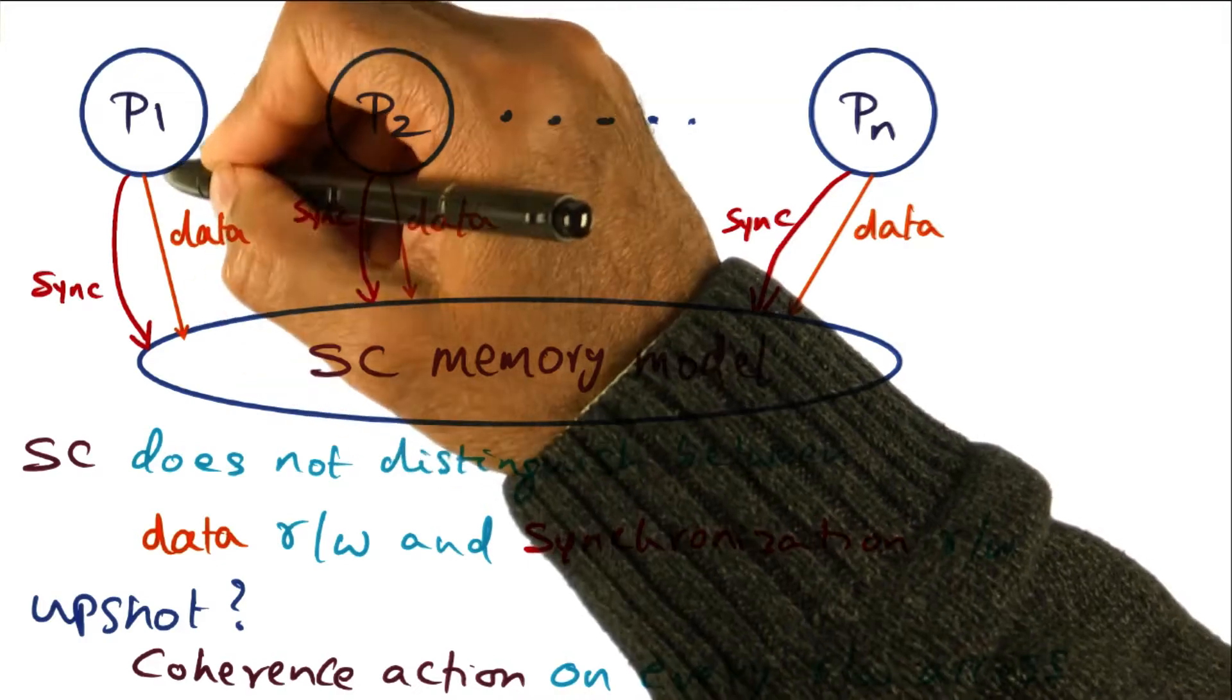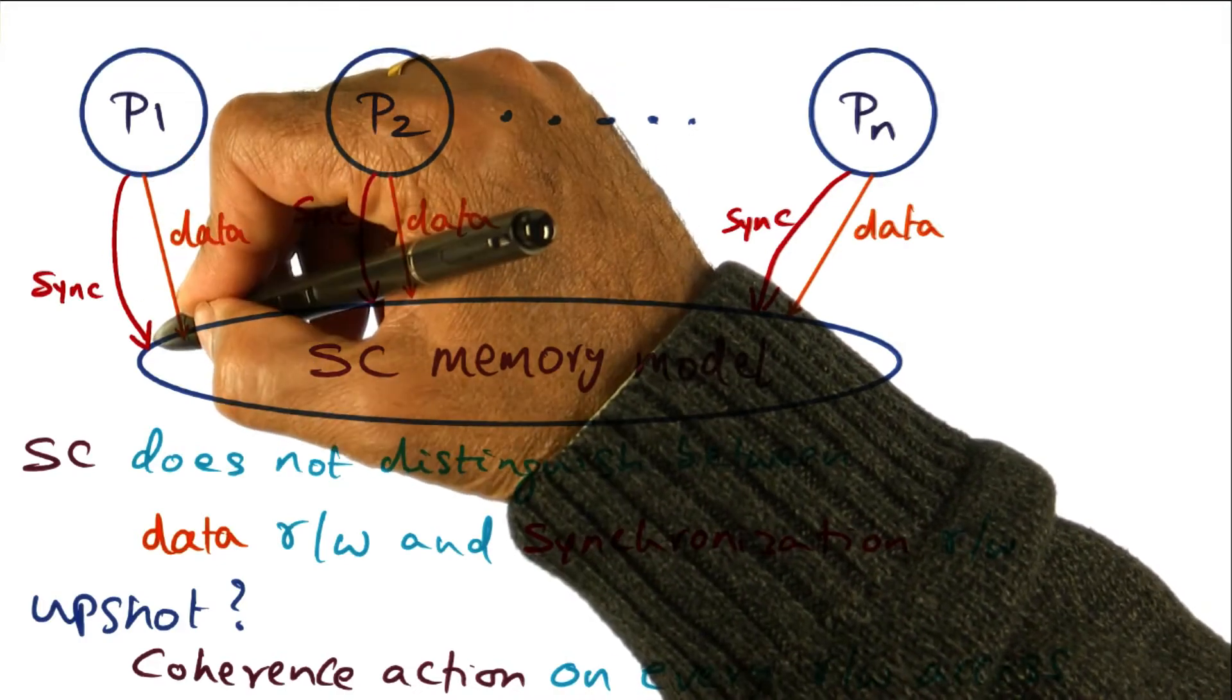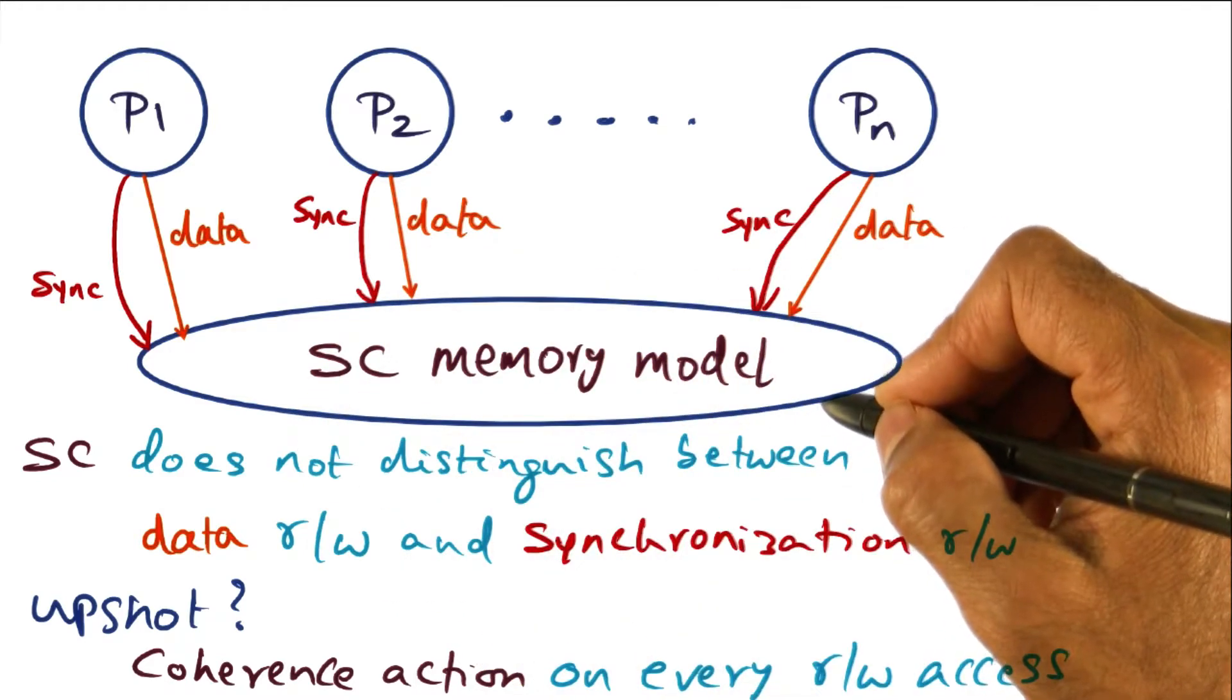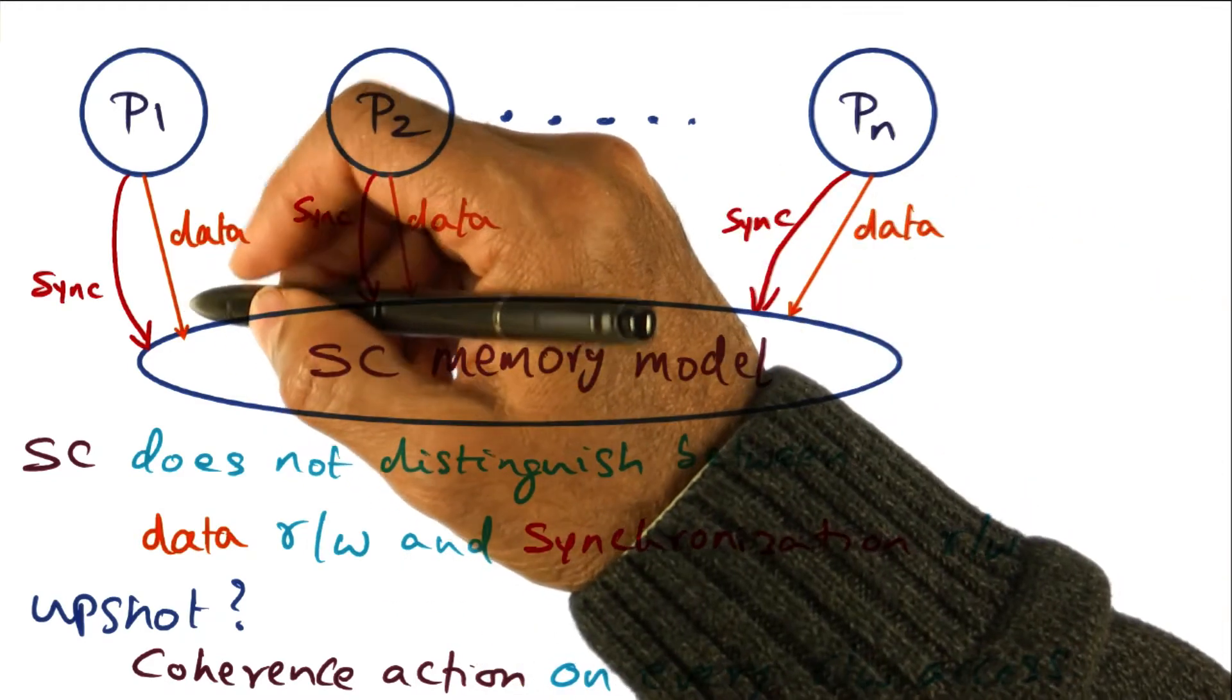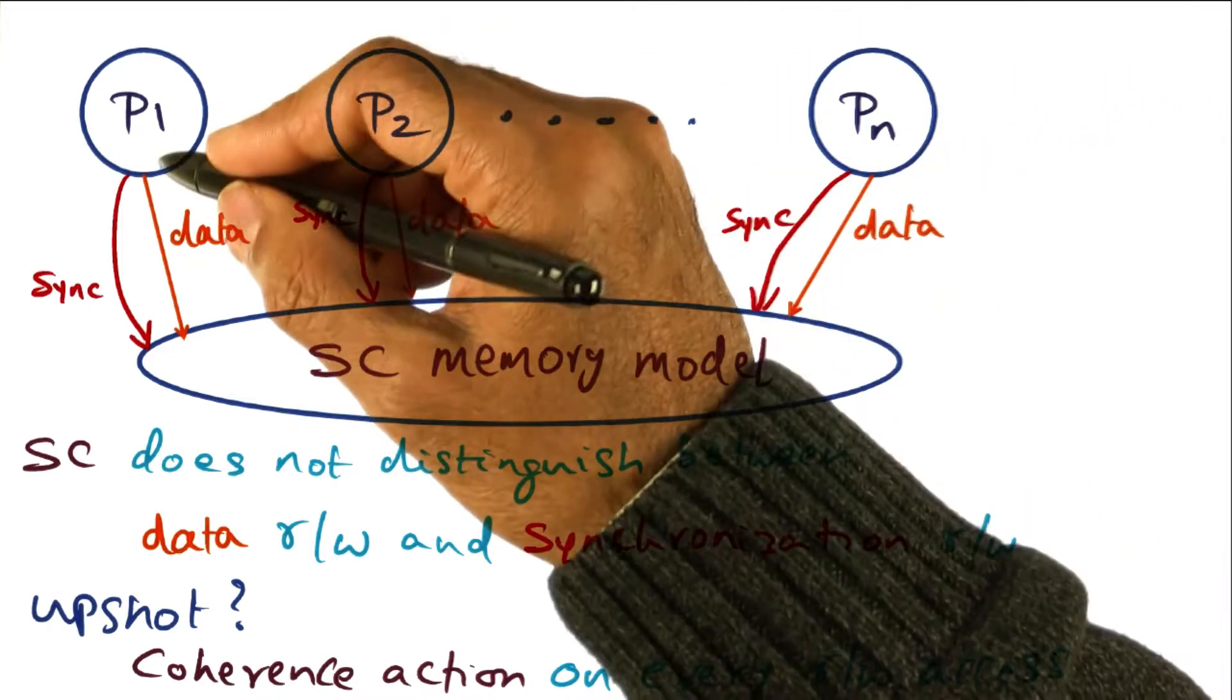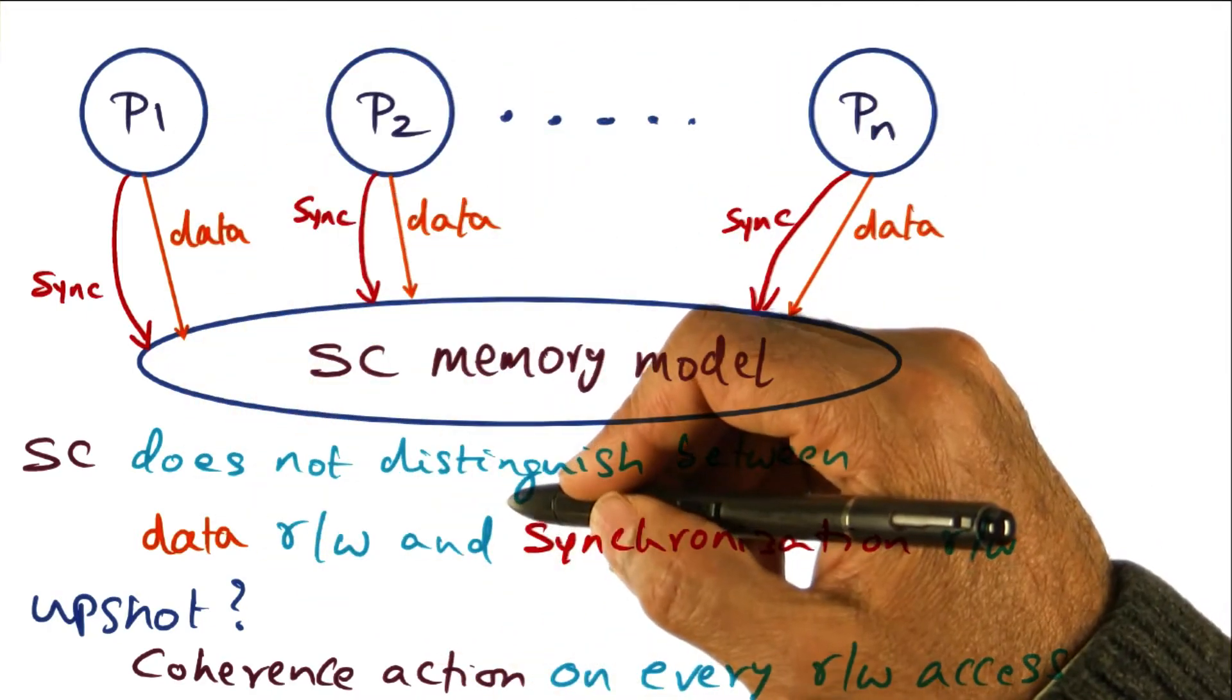Some of them are for data, and some of them are for synchronization. Now, so far as the sequentially consistent memory model, it does not distinguish between accesses coming from the processors as data accesses or synchronization accesses. It has no idea.